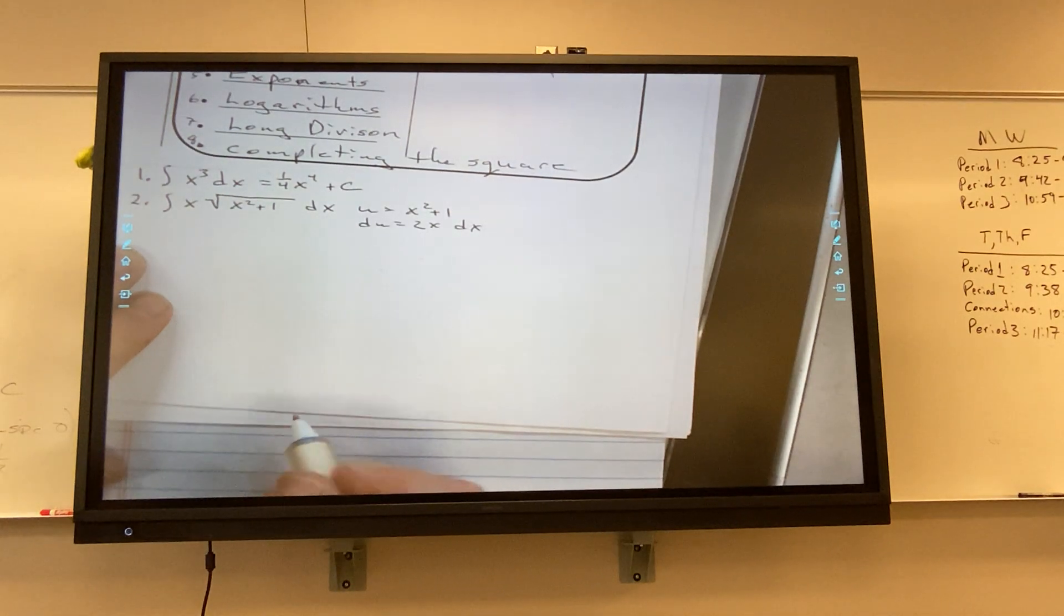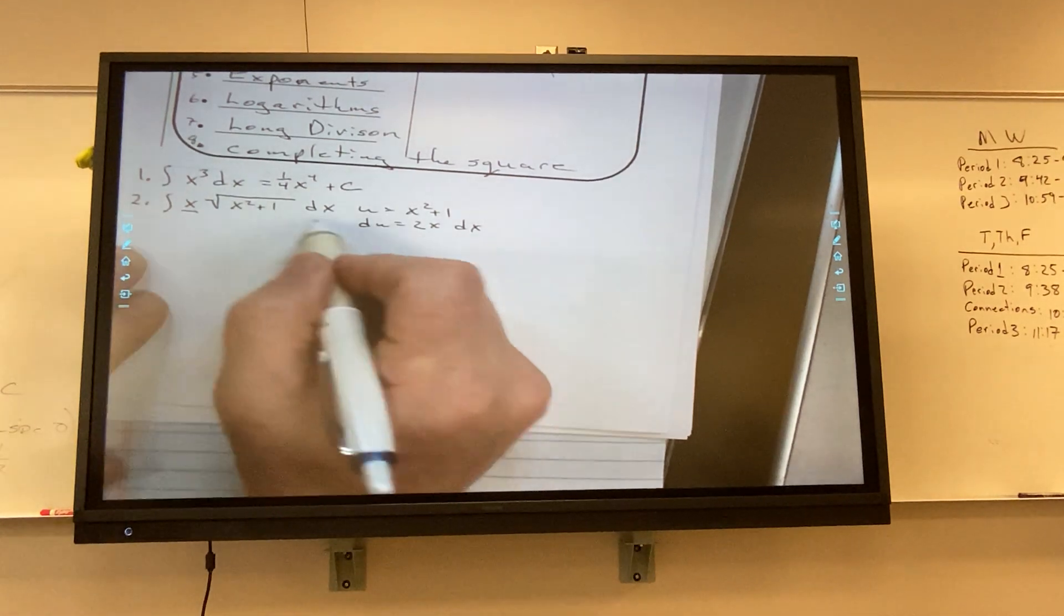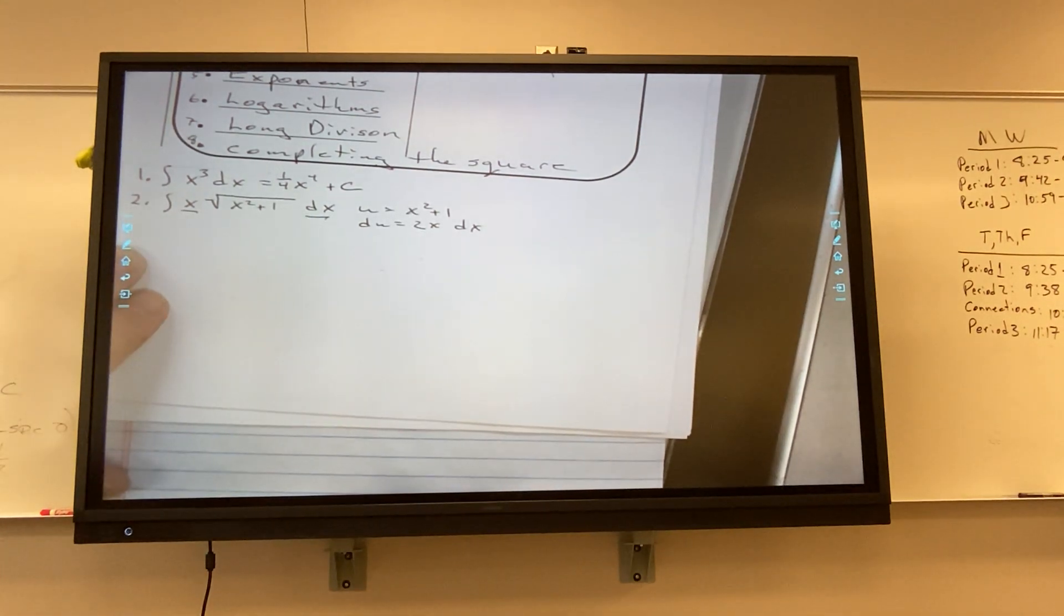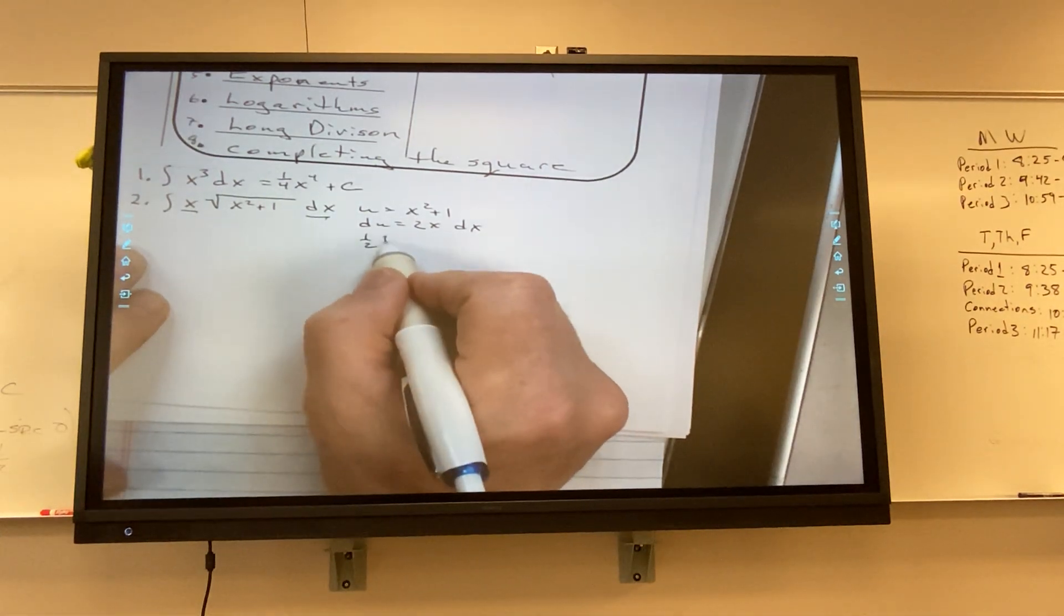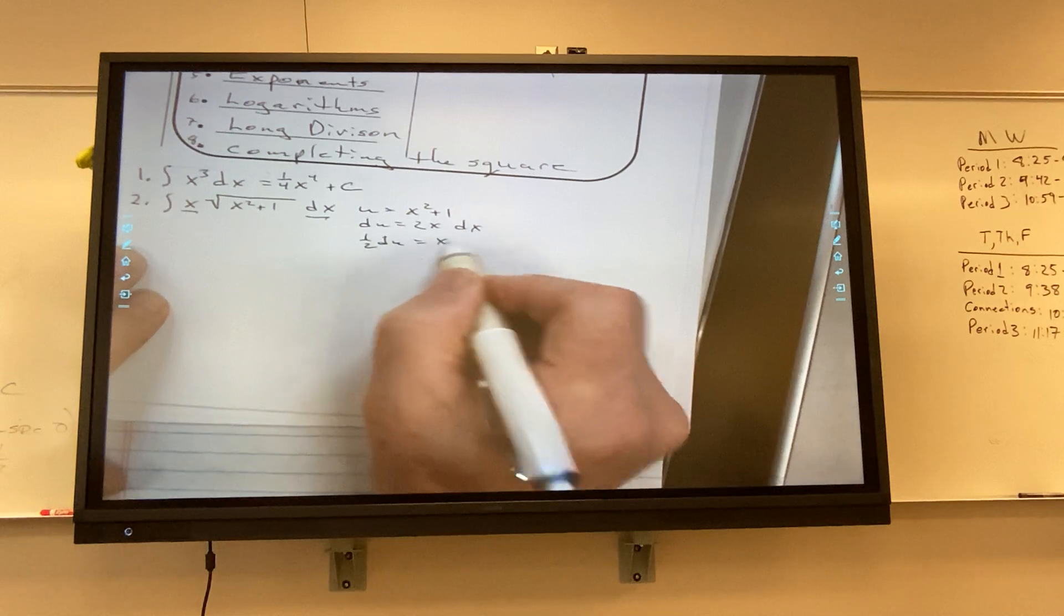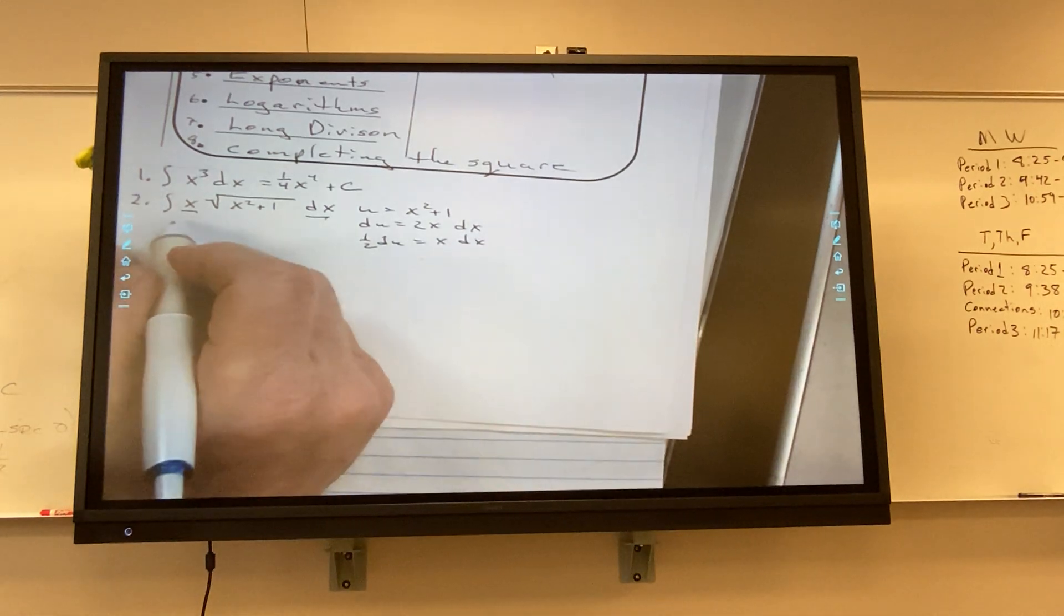Okay. Do I leave it like that? Do I have a 2x dx? I have an x dx. So I have one half du equals x dx.